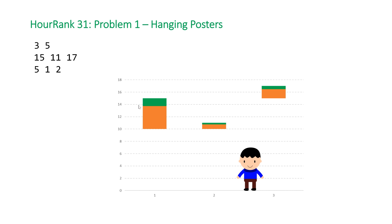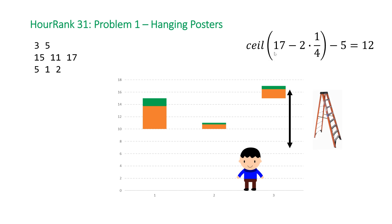Here is basically the point that each poster is going to get hung at. All we need to do is calculate all of these points, find the maximum, and then subtract Arthur's height from it — that gives us the required ladder height. The formula is: take the top of the poster and subtract 25% (one over four) of the length of that poster. We need to take the ceiling of this value because we only have ladders with integral heights and we can't round down. Subtracting Arthur's height from the maximum gives us 12.